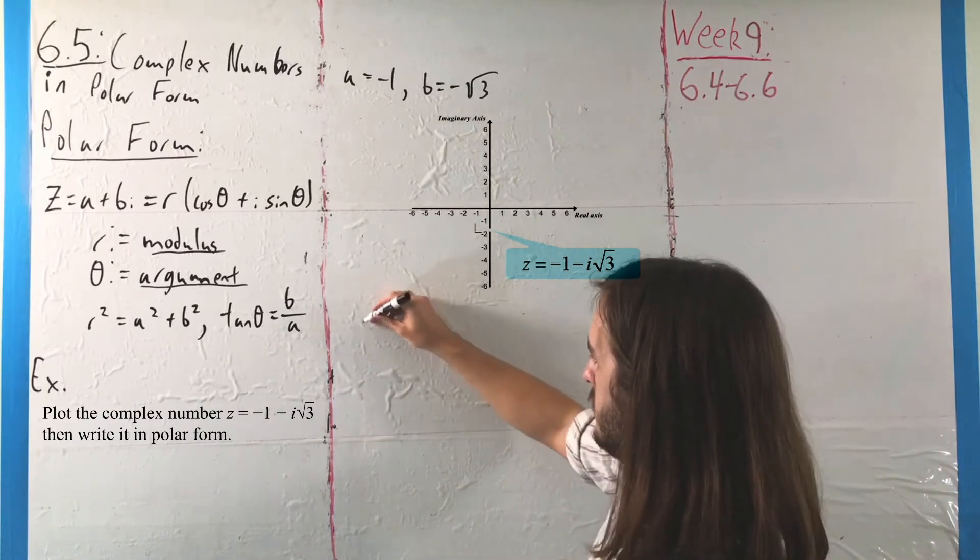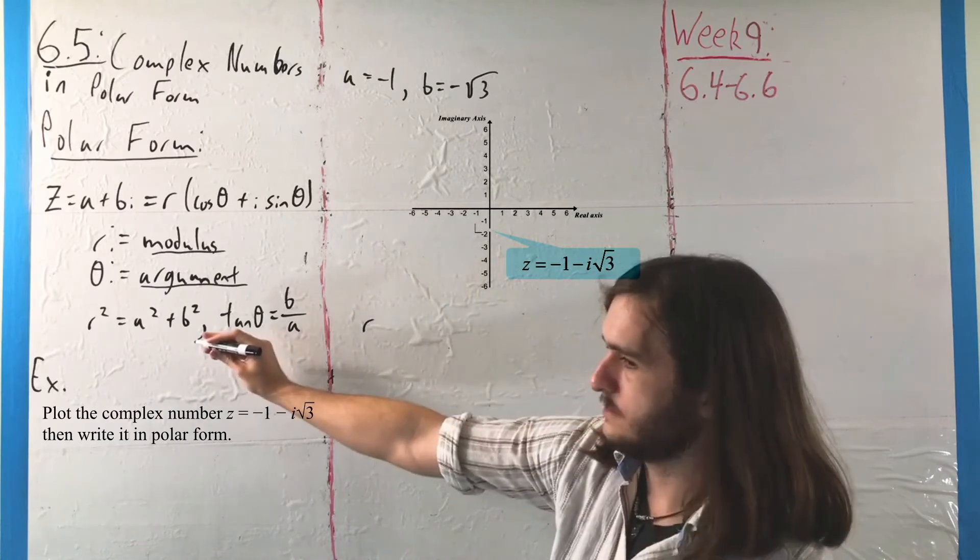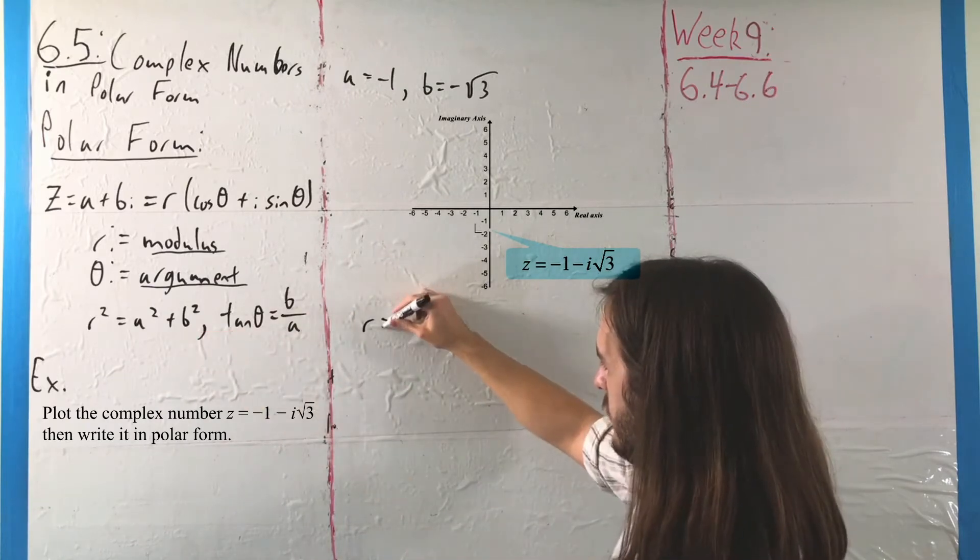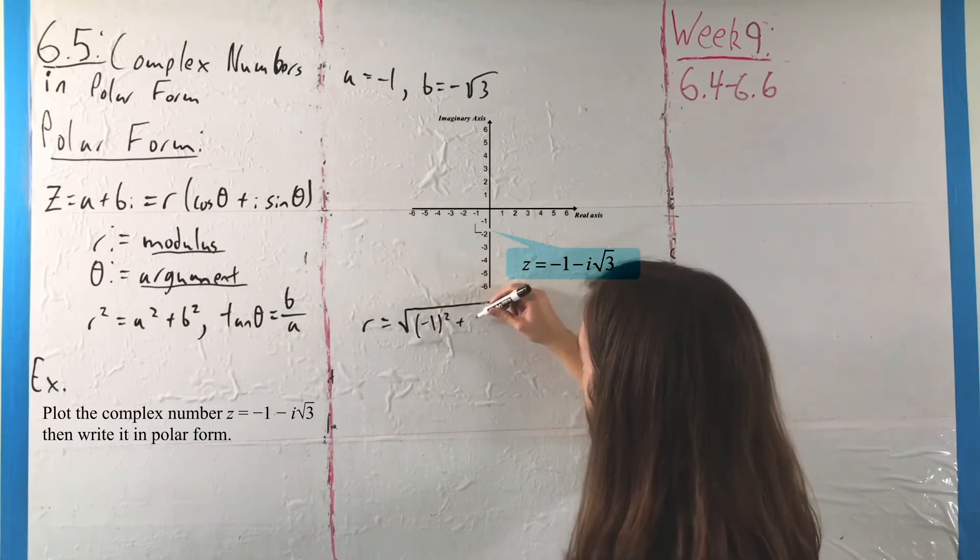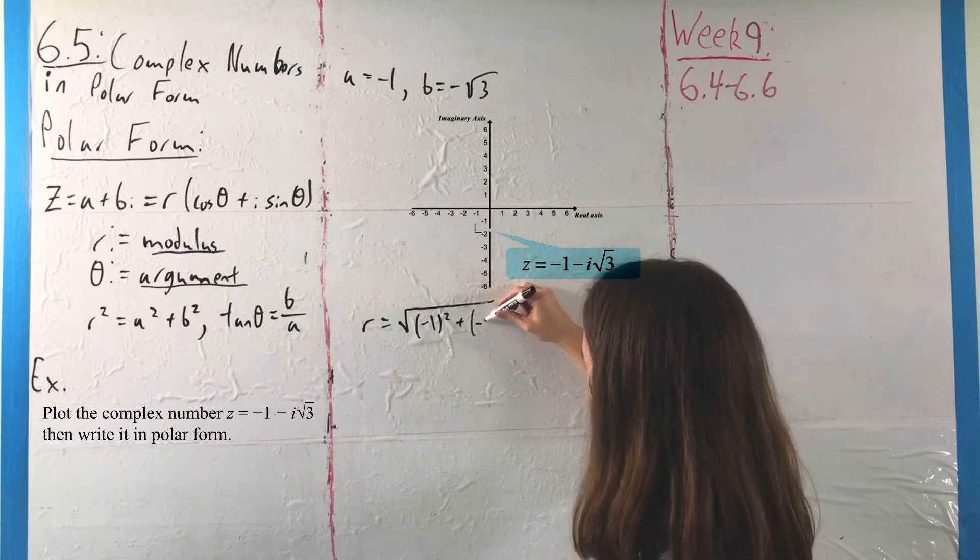To get r, we use the distance formula: r = √(a² + b²) = √((-1)² + (-√3)²). It looks terrible, but when you square it, nice things happen.